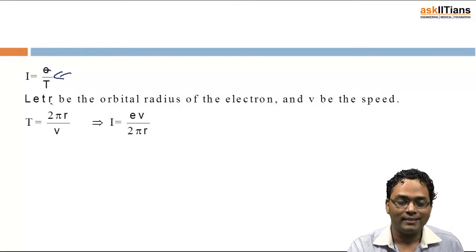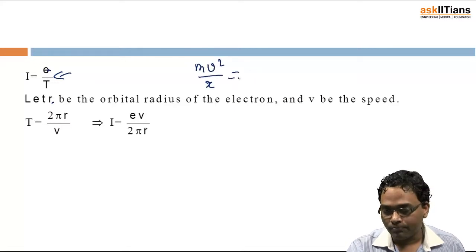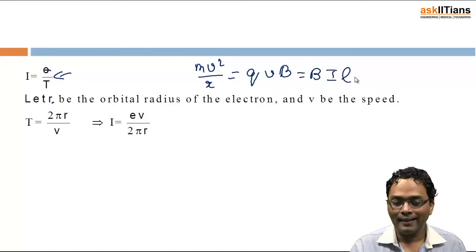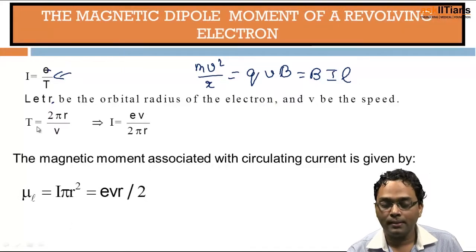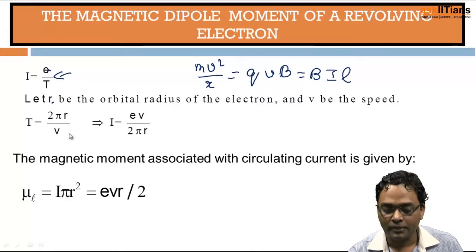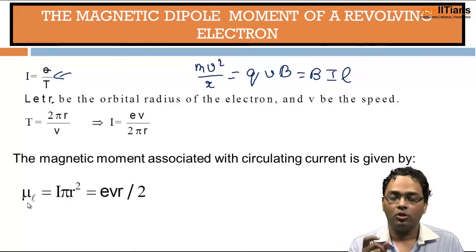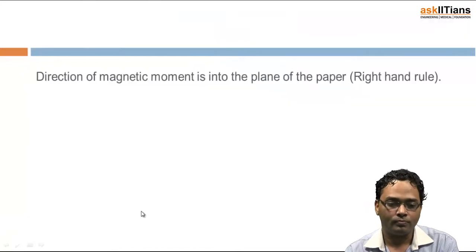If r is the radius, then for an electron moving in a magnetic field: mv²/r = qvB, or equivalently B·i·l. Simplifying the current expression gives i = ev/(2πr). The magnetic moment is i times area; taking the electron's path as a circle of area πr², this gives magnetic moment μ = evr/2.